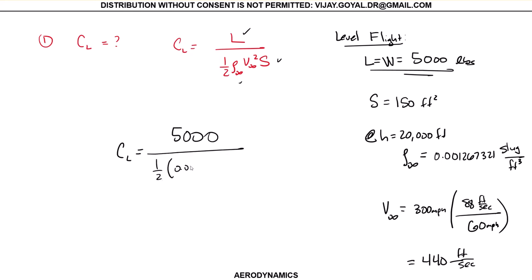Now I replace everything in here: 5000, one-half, 0.001267321, 440 squared, 150. This gives you a total coefficient of 0.27. Remember it has no units.